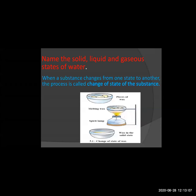We will study what is the change of state. What is the definition of change of state of substance? When a substance changes from one state to another, the process is called change of substance. For example, when the ice cube is taken out of the refrigerator, it immediately starts melting. So the solid form of ice is now converted into liquid. So there is a change in the state.